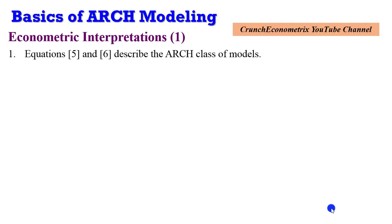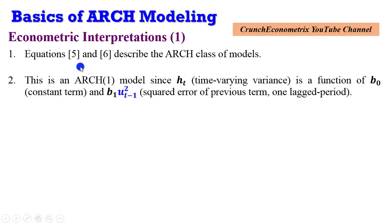Continuing from part 1, let's look at some econometric interpretations. Equations 5 and 6 describe the H class of models. Remember I told you to write down the econometric model so that you can follow my explanations. This is an H1 model because Ht has been modeled to be a time-varying variance. It is a function of a constant term and a squared error of the previous term, which is one lagged period.